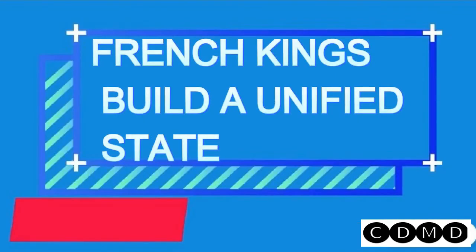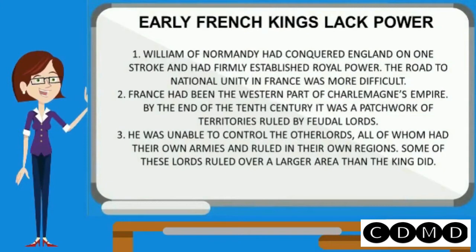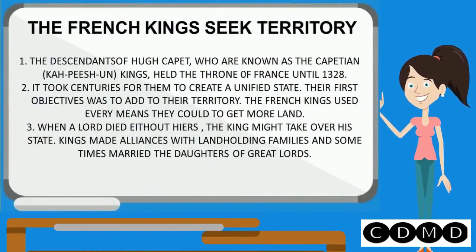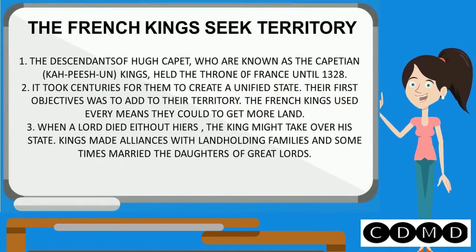French kings built a unified state. William of Normandy had conquered England in one stroke and firmly established royal power. The road to national unity in France was more difficult. France had been the western part of Charlemagne's empire, and by the end of the 10th century it was a patchwork of territories ruled by feudal lords. The descendants of Georges Capet, known as the Capetian kings, held the throne of France until 1328. It took centuries for them to create a unified state, and their first objective was to add to their territory.